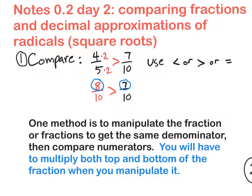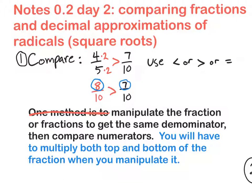So we're going to do exactly this right here. We're going to manipulate the fraction or fractions to get the same denominator, and then compare numerators. You have to multiply both top and bottom of the fraction, or maybe fractions, when you manipulate it. How about this? Let's write down the black part right here. Manipulate the fraction or fractions to get the same denominator, then compare numerators. So hopefully you guys got down these notes on how to manipulate the fraction. You have to get the same denominator, and whatever you do to the bottom, you do to the top.